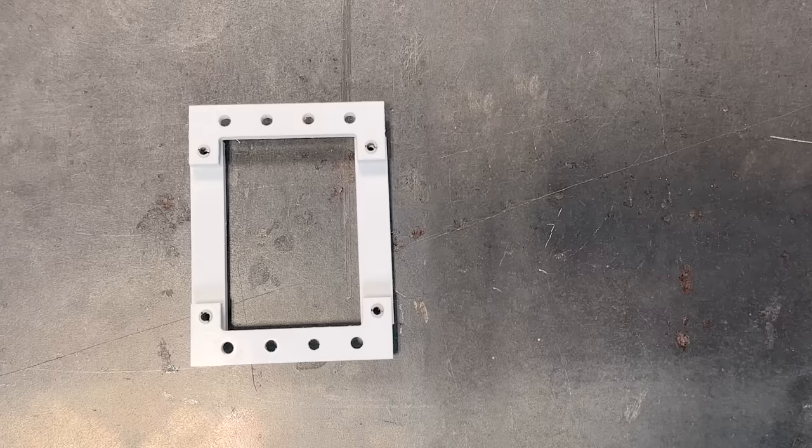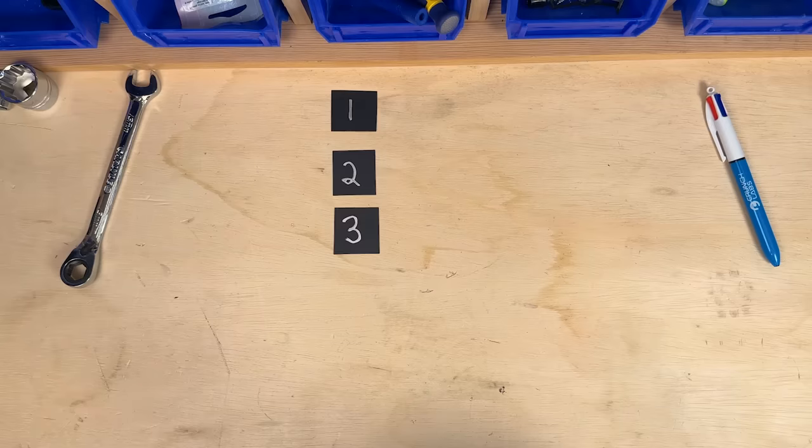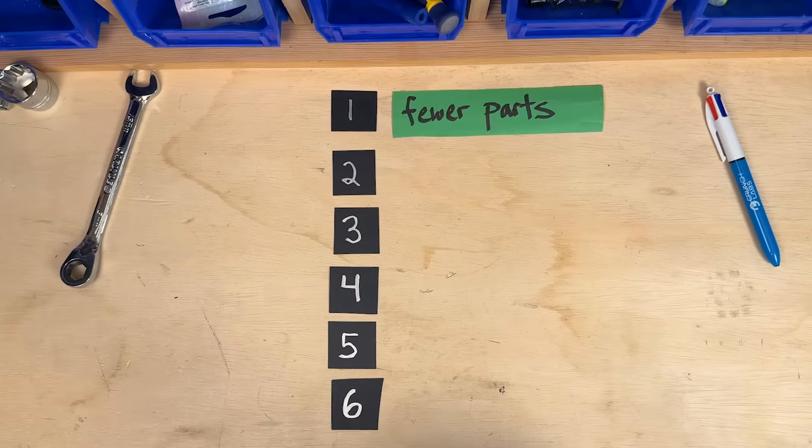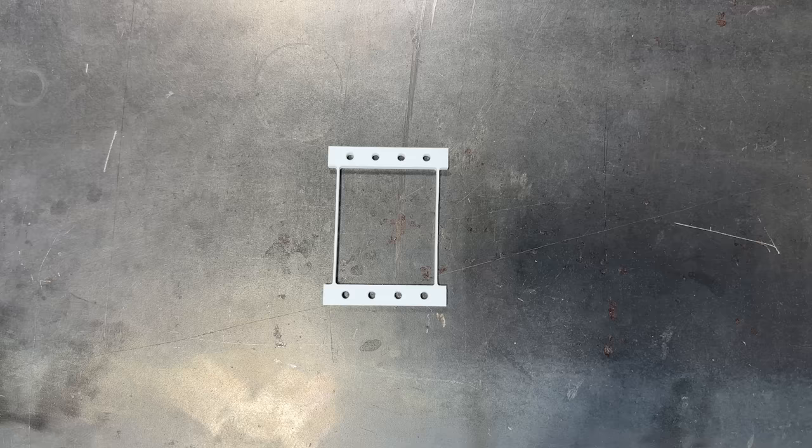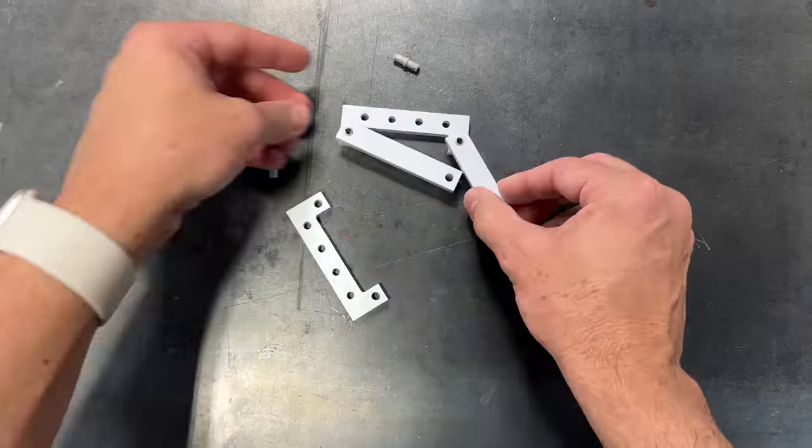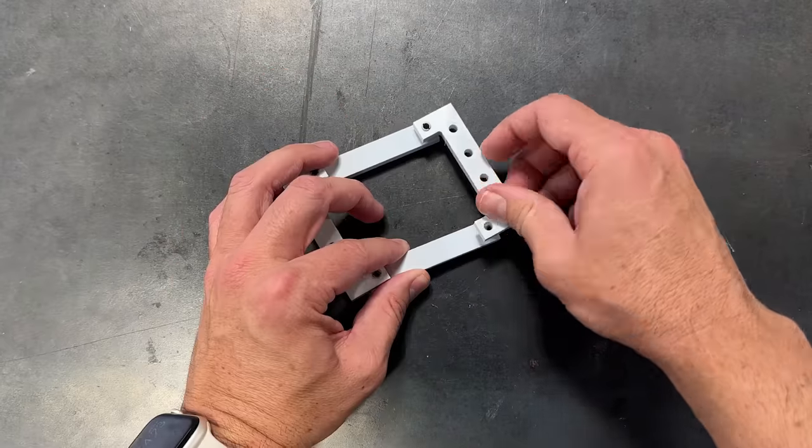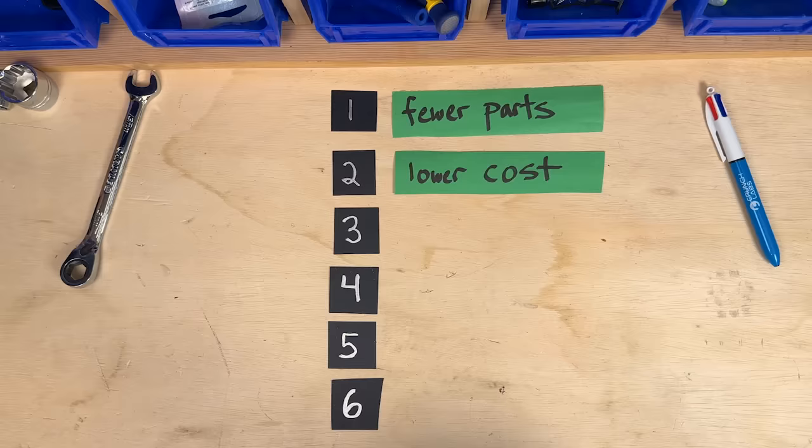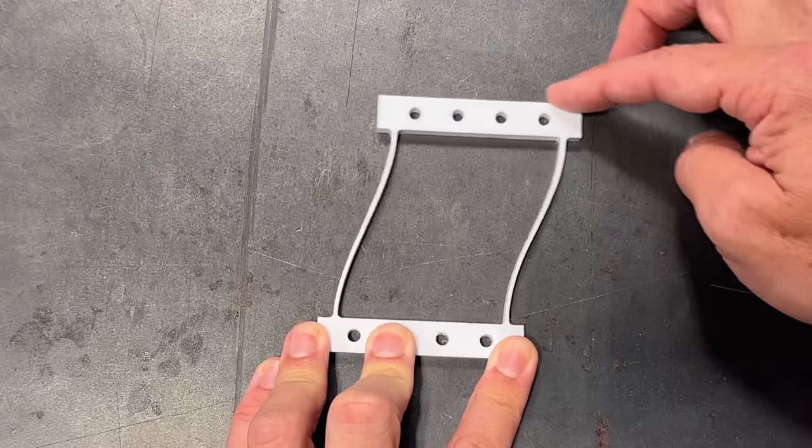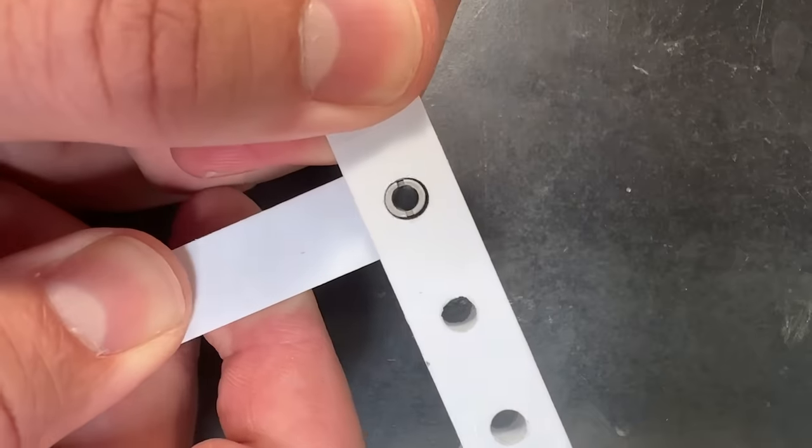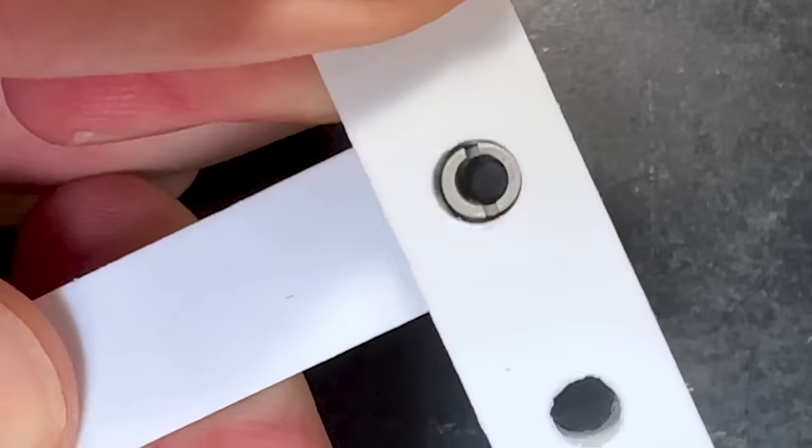And as Dr. Howell went on to explain, the compliant mechanism version offers six advantages. Number one, it's fewer parts. In this case, eight versus one. Number two, lower cost. There's no labor for assembly, and the whole thing can be made in one process, like 3D printing in this case. Three, it's more precise. It always returns back to the exact same spot, and there's no slop between different parts, like the hole in the hinge.